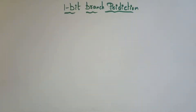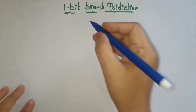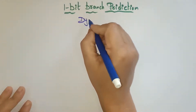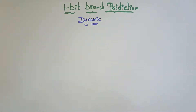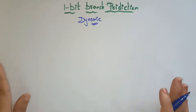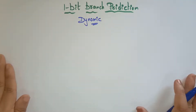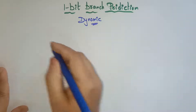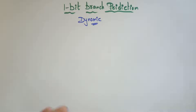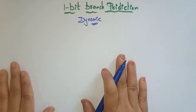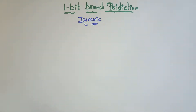Let's consider another example in 1-bit dynamic branch prediction. In the previous video, I explained what exactly dynamic branch prediction is and took one example. But still, if you are facing any doubts, in this video you will get complete clarity on what exactly this 1-bit dynamic branch prediction is. Before considering an example, let me give a simple overview.